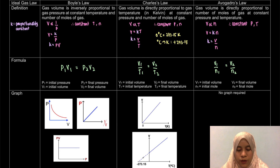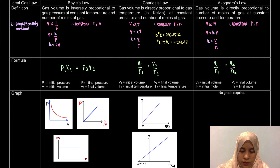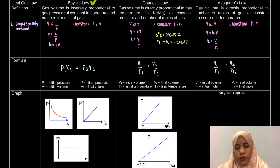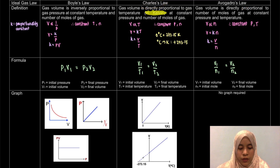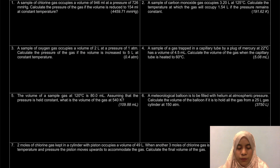So that is the law that we're gonna learn about. Ada tiga lah: Boyle's law, Charles' law, dengan Avogadro's law. Penting untuk kamu tahu, kalau Charles' law ni, temperature dia must be in Kelvin. So now let's look for examples on page 3. Let's do the calculation.